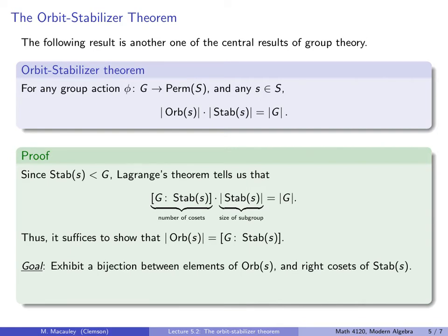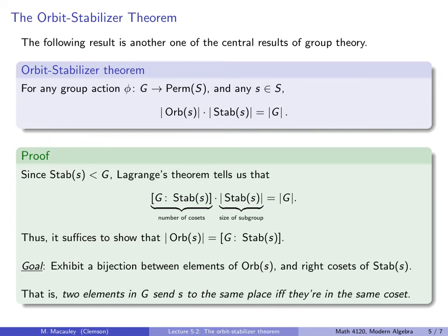Our goal is to exhibit a bijection between elements of the orbit and right cosets of the stabilizer. In other words, two elements in our group send s to the same place if and only if they are in the same coset. Think of it this way: pressing the g button and the h button have the same effect on s if and only if they are in the same coset of the stabilizer.